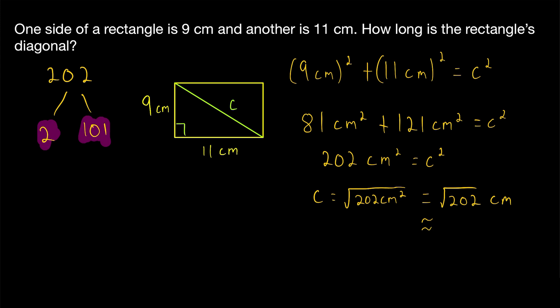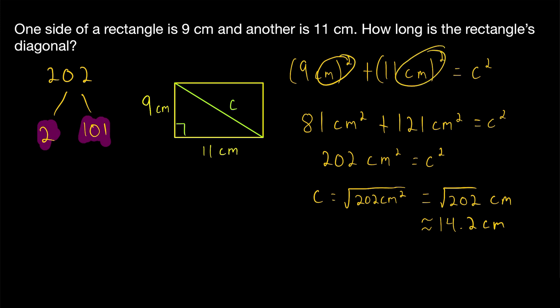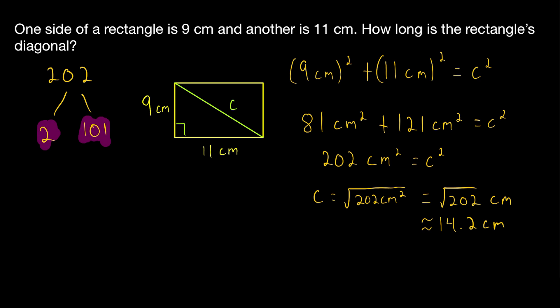If you like approximations, that's about 14.2 centimeters. Since we were given the side lengths in centimeters, we know our diagonal will also be measured in centimeters. In the upcoming problems we can leave units out of the computation and know that the final answer will carry the same units.